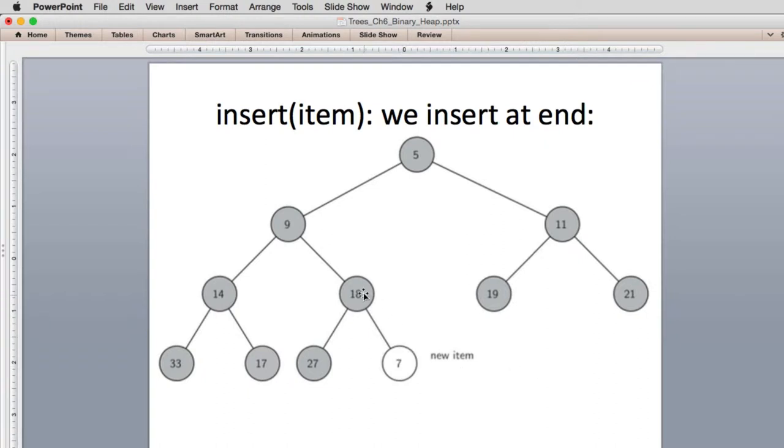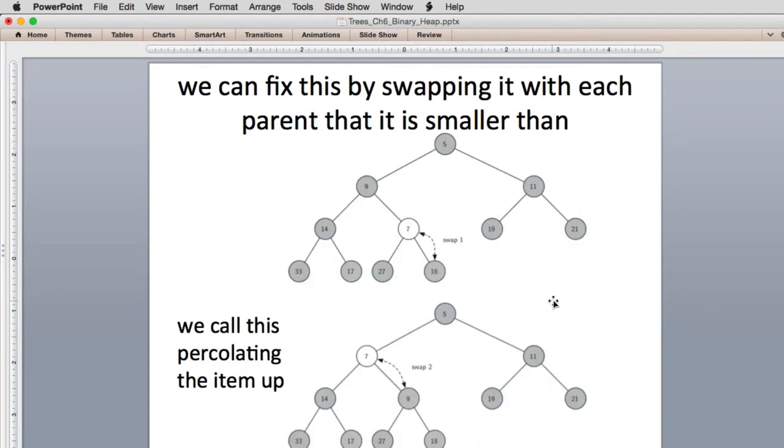And we do that by just swapping it with its parent if it's out of order. So this is called percolating up. The procedure is if it's out of order, once we've added it to the end, we swap it with its parent. So you can see the 7 and 18 swap. And now if it's still out of order with that parent, it swaps with that parent. It just keeps doing that until eventually it may end up at the root.